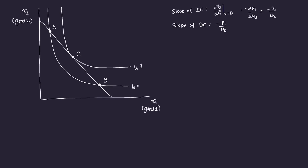Consider point A. At point A, the consumer will consume this much of X2 and this much of X1. At point B, the consumer will consume this much of X1 and this much of X2. Bundle A and bundle B both lie along the same indifference curve U0, so you can infer that the utility derived from consuming X1A and X2A is exactly the same as from consuming X1B and X2B, because they lie along the same indifference curve.